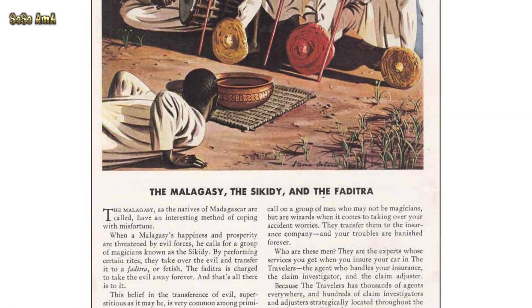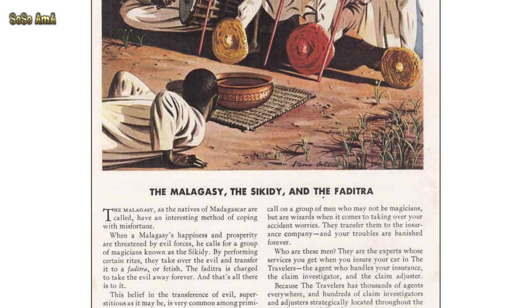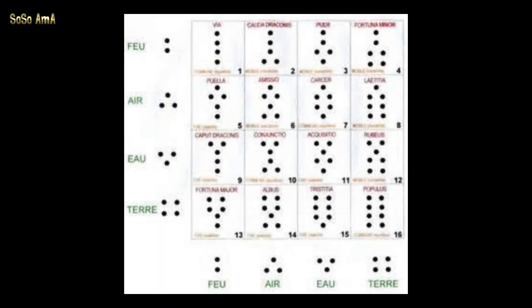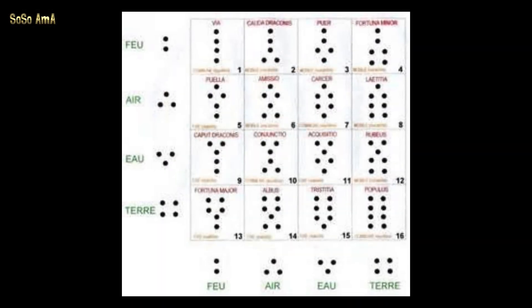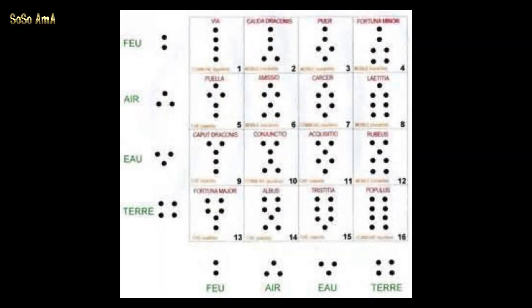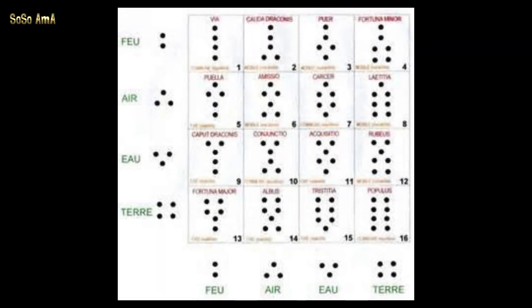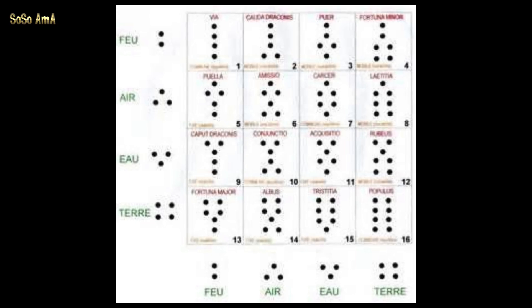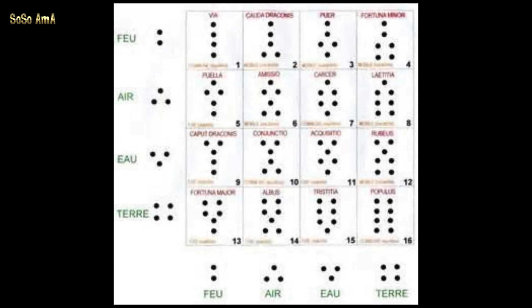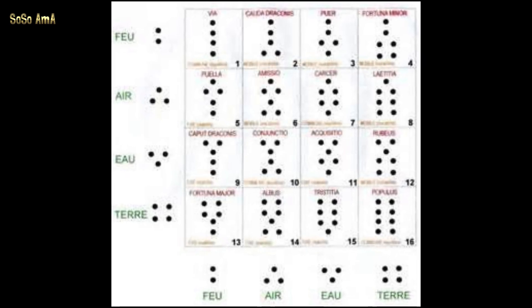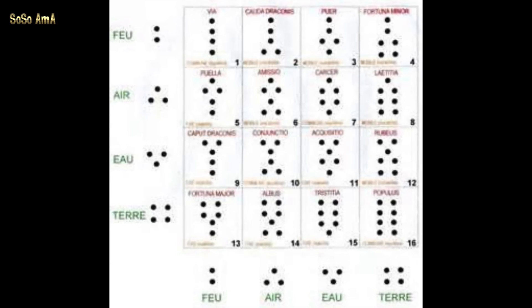Another way to use the tableaus is related to the divining practice itself. In this case, the mother siccity is chosen randomly by taking 16 piles of seeds and reducing them to 1 or 2 seeds by deleting them 2 at a time.